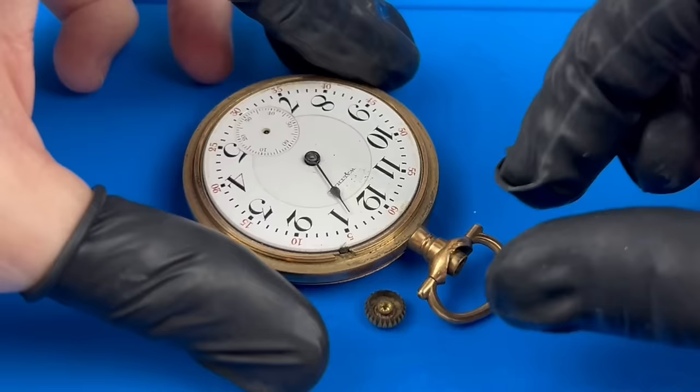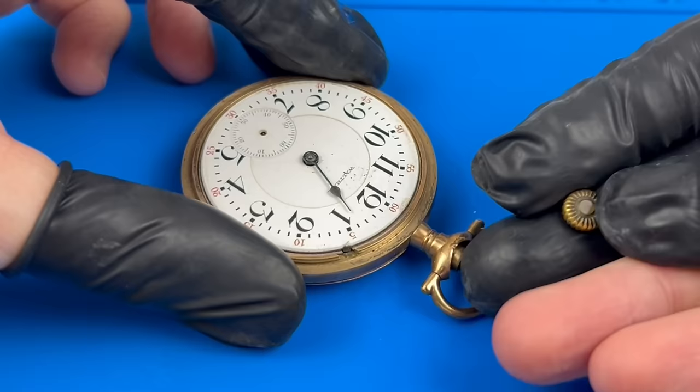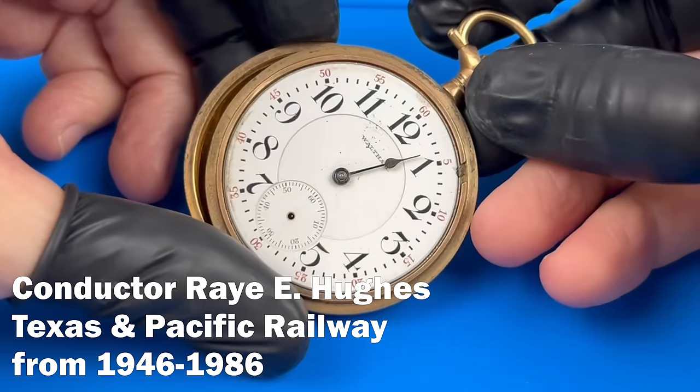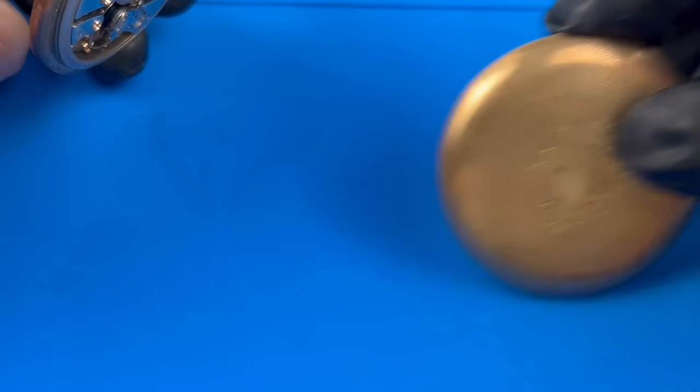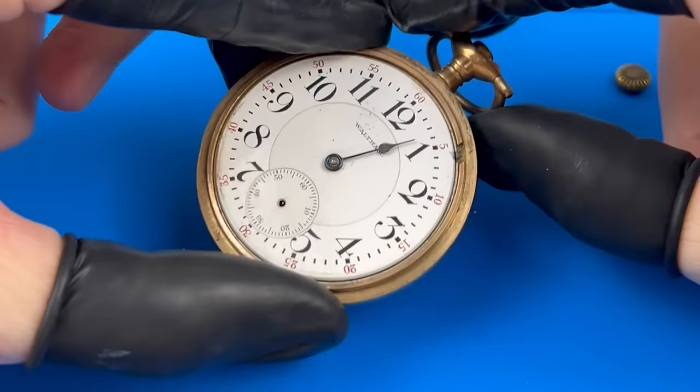This is a very special family heirloom sent to me by a viewer to be restored in honor of his late father, the conductor Ray E. Hughes of the Texas and Pacific Railway. It may look bad, but what we really have here is a diamond in the rough.